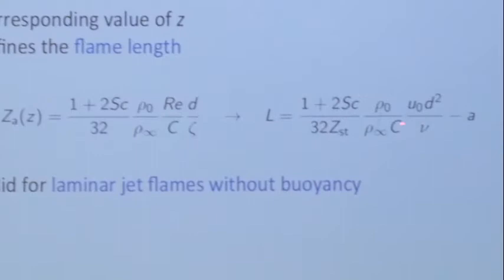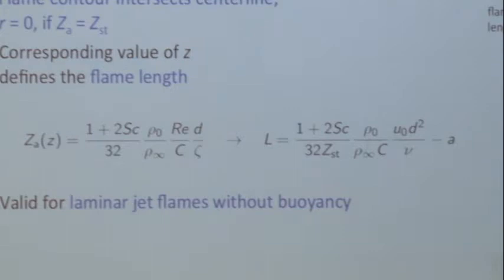The flame length also depends on the transport coefficient and the stoichiometric mixture fraction Z_st. You can modify Z_st by diluting the fuel or enhancing the oxygen in the air. For different hydrocarbon fuels burning in air, Z_st is similar, so the flame length is not drastically different between fuels.